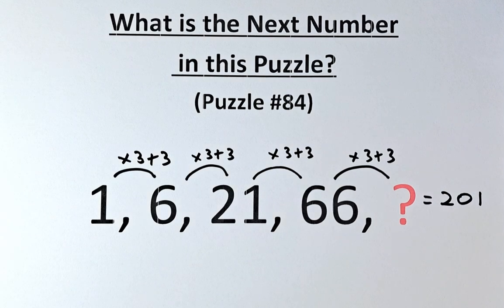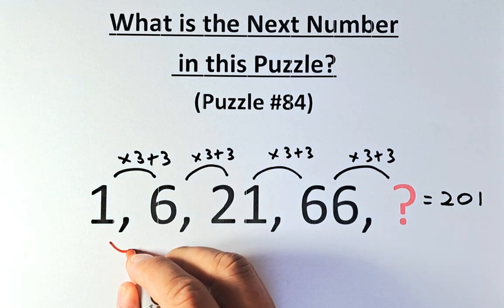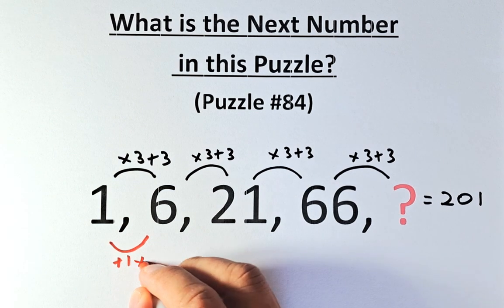Now for another way of getting 201. From 1 to 6, what we're going to do is add 1 and multiply by 3.